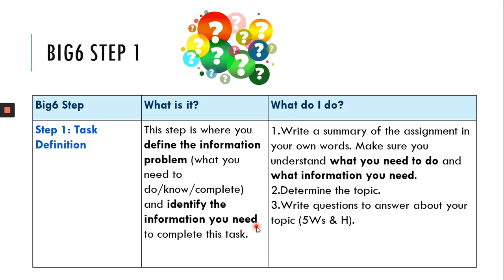So Big Six step one, that is task definition. This step is where you define the information problem, which is a fancy way of saying what you need to know, or do, or complete, and identify the information you need to complete this task. So in that third column, you have a series of steps for what you should do.